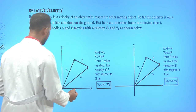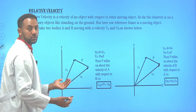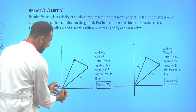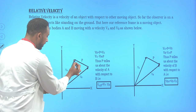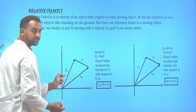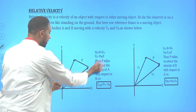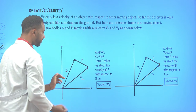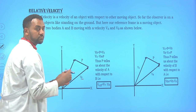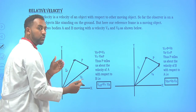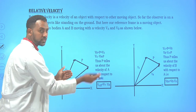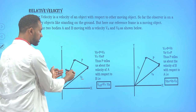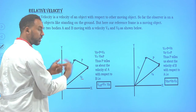A stationary frame of reference tells you the velocity of a given object. But now we are trying to see the velocity of something with respect to another moving object. Suppose two objects are in motion: car A is heading in this direction with velocity V_A, and another car is moving with velocity V_B in this direction.